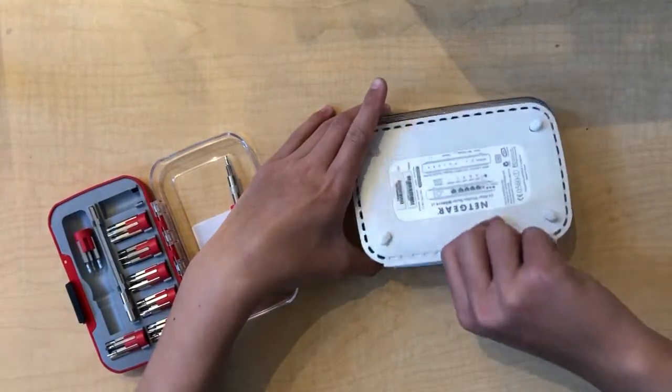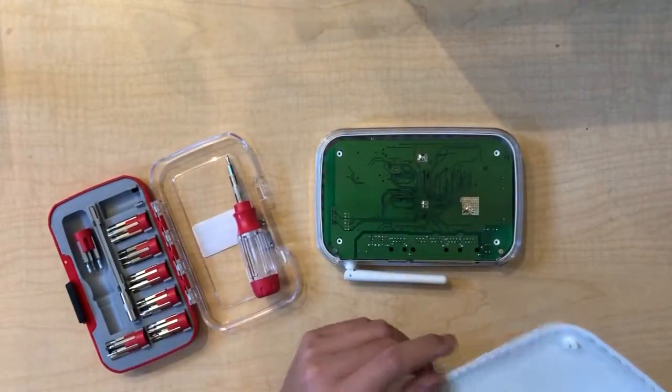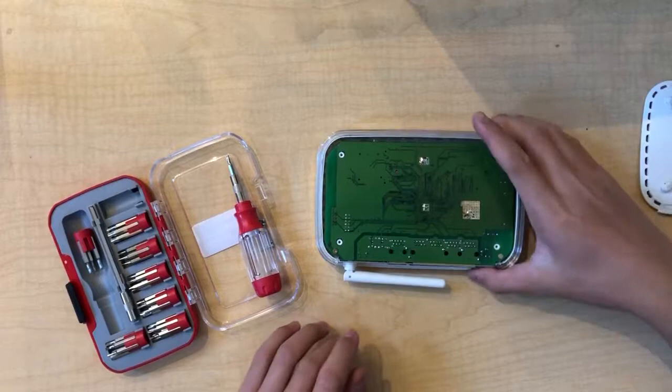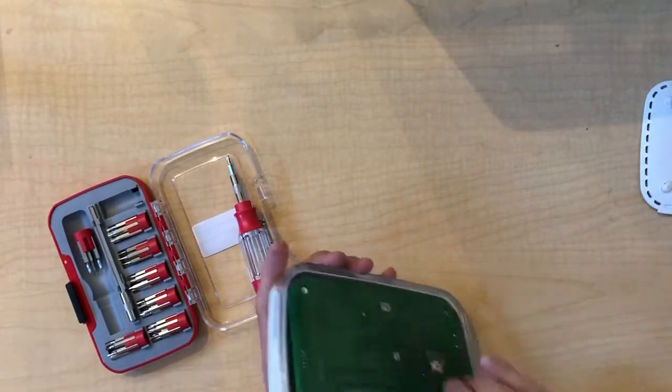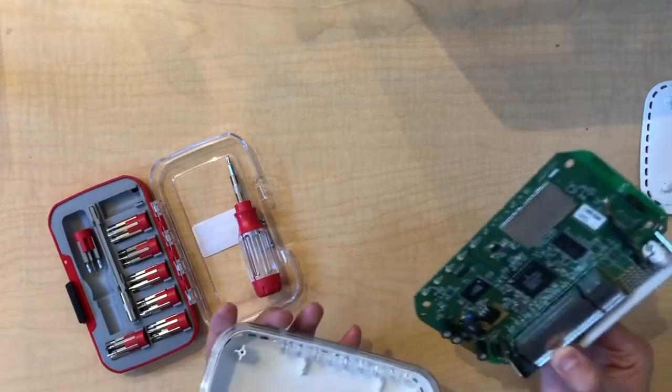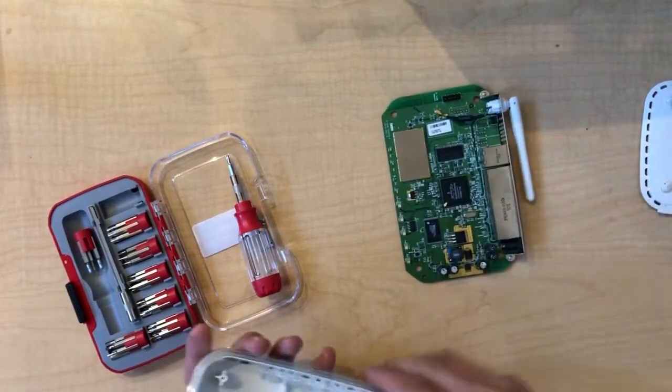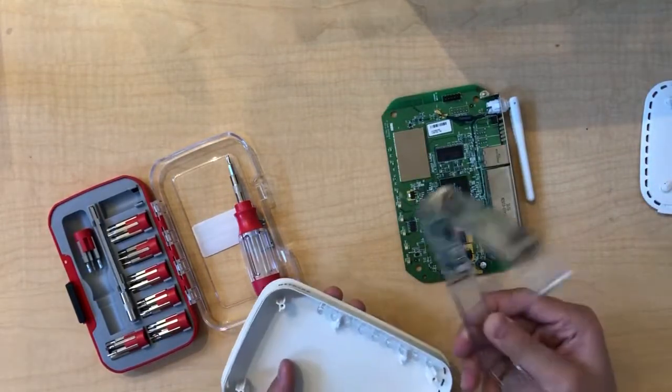That should pop right off, there it is. And now we are in the router. The whole assembly should lift out of the router like this and everything should just fall apart.